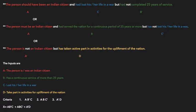For the third criteria: the person is not an Indian citizen — since A means the person was an Indian citizen, we take A as A-bar. The second part says has taken active part in activities for upliftment of the nation — D is taken as it is. So the third criteria expression is A'·D. Since the criteria use an OR condition — either first, second, or third criteria — we combine them with OR signs.